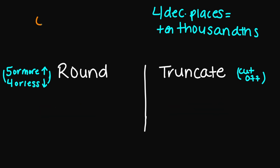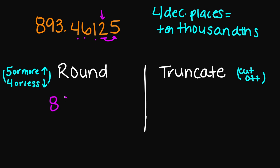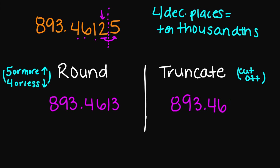Let's try 893.46125 to four decimal places. Counting 1, 2, 3, 4 puts me right here at the 2. If I look next door, I have 5 or more, so I'm rounding up. Rounded to four decimal places: 893.4613. And if I had to truncate, I cut right between the 2 and the 5, giving 893.4612.